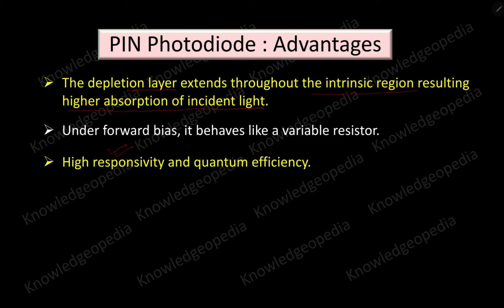Responsivity is the ratio between generated photocurrent and incident power. If the photocurrent is high, that gives us high responsivity. And since quantum efficiency is directly proportional to responsivity, high responsivity means we will also get high quantum efficiency.